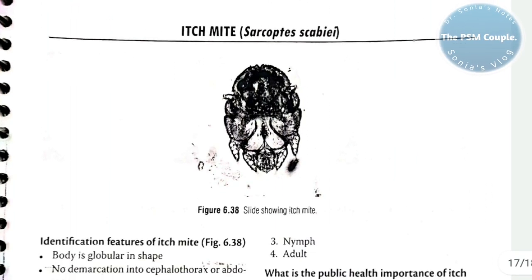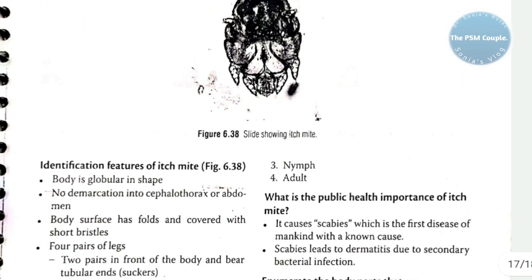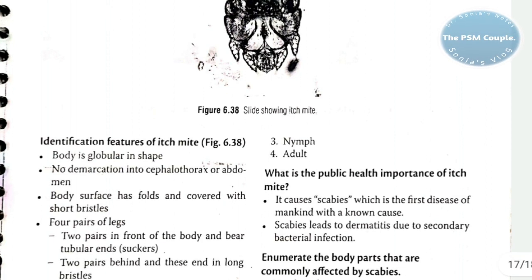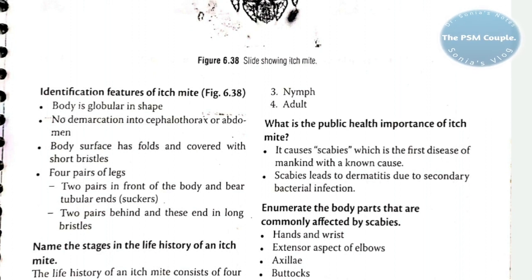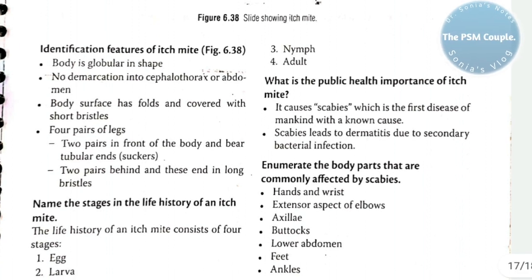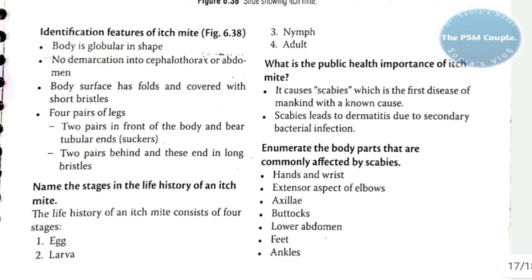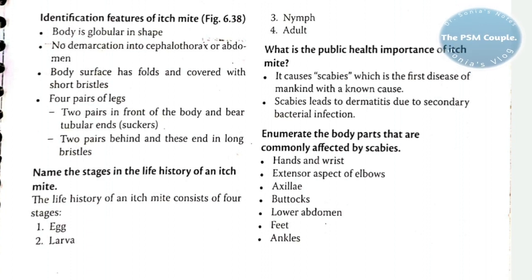The last spot — itch mite, Sarcoptes scabiei. Identification features: body is globular in shape, no demarcation into cephalothorax or abdomen, body surface has folds and is covered with short bristles. Four pairs of legs: two pairs in the front with tubular suckers, and two pairs behind ending in long bristles. Stages are egg, larva, nymph, and adult. It causes scabies, which is the first disease of mankind with a known cause.